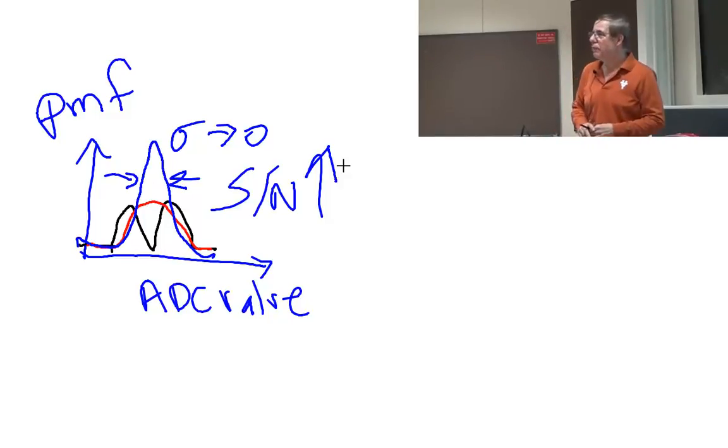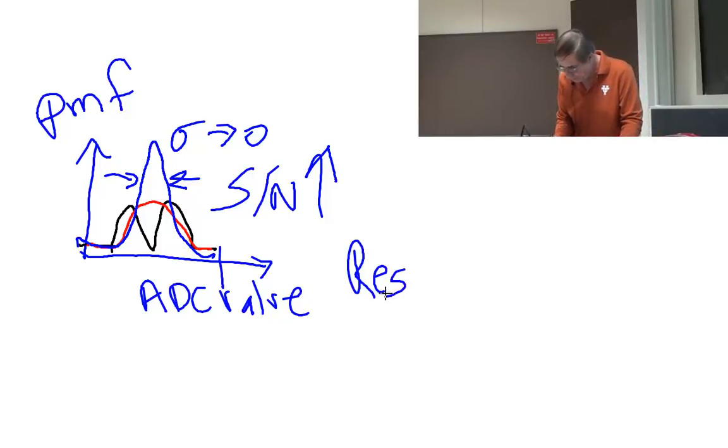So we have a clear trade-off between what and what? Time and accuracy is not the right answer. If the correct answer is over here, I'm gonna say it's not accuracy. Accuracy is the difference between truth and measured, and you don't know what the true voltage is. This is not a measure of accuracy, this is a measure of noise or signal-to-noise or resolution.